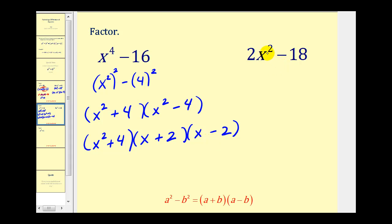And in our last example, this first term is not a perfect square and neither is 18. But remember the first step in any factoring problem is to look for the greatest common factor. And 2 does happen to be a common factor between these two terms. If we factor 2 out, we're left with x² minus 9.